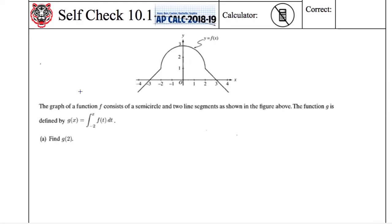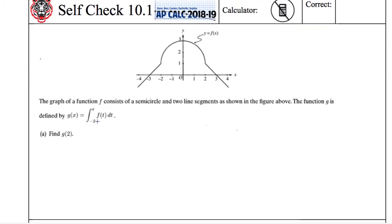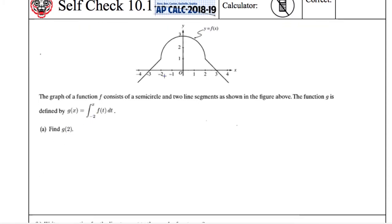G of x is represented by this accumulation integral from negative two to x, and we're trying to find g of two. By the way, this is one of the first self-checks not pulled from an AP question, so there's not an official scoring guide. It's gonna be the integral from negative two to two, because I'm plugging in two for x, f of t dt, and that's gonna equal this area between negative two and two. This rectangle down here is one by four, so it has an area of four.